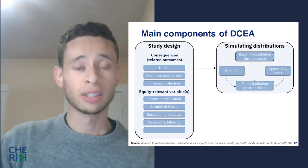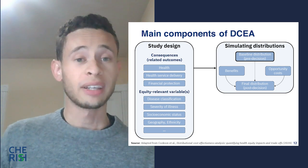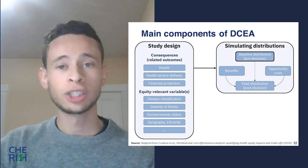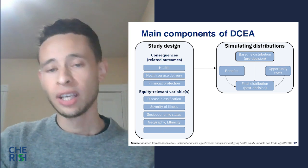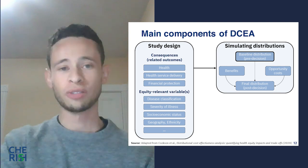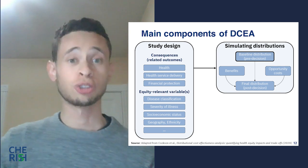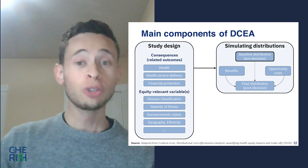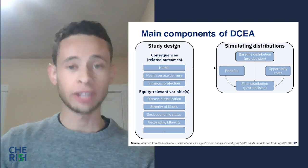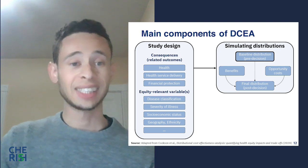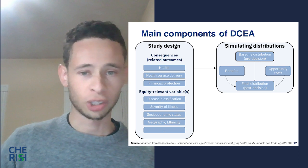Once the consequences of concern and equity-relevant variables are defined, we can start simulating the distribution of outcomes. We need to simulate the baseline distribution of costs and benefits according to equity-relevant variables — meaning the distribution prior to any new intervention. Then, after taking into account potential intervention strategies, we simulate what the new distribution of benefits and costs will be post-decision, and compare it to the baseline distribution to estimate who is likely to gain and lose, and by how much.